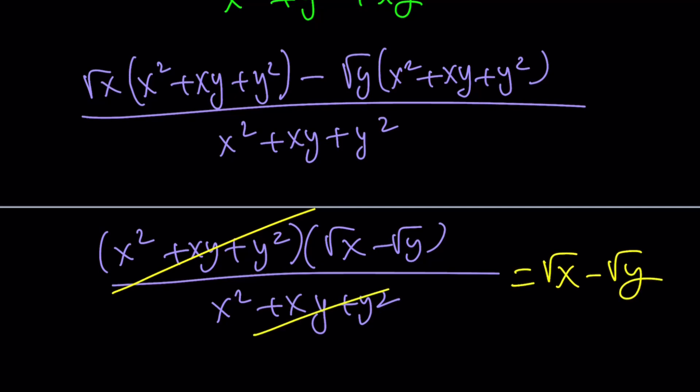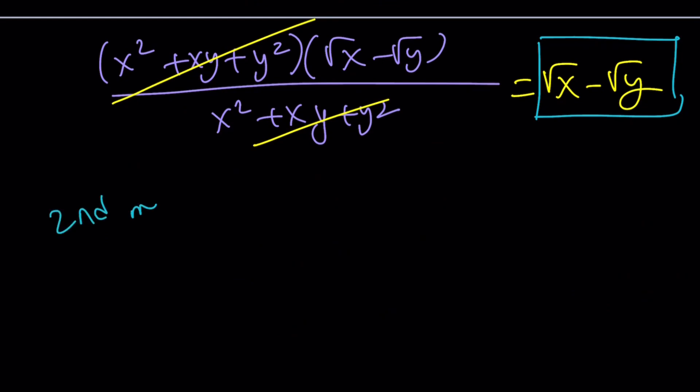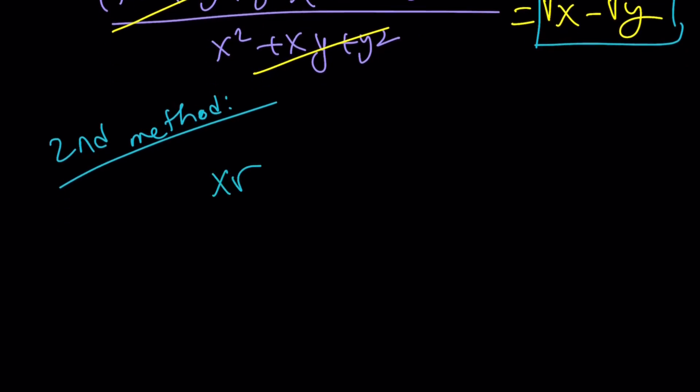It was that simple. Conjugates help us solve this problem because they always do. Let's take a look at the second method. For this expression, I'm going to use substitution because substitution helps. It makes sense because you want to get rid of the radicals quickly.